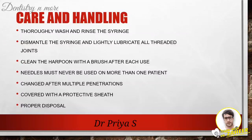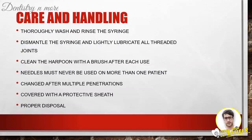To carefully handle the local anesthetic armamentarium: after each use, thoroughly wash and rinse the syringe free of local anesthetic solution, saliva, or any foreign matter. The syringe may be autoclaved like other surgical instruments; after every five autoclavings, dismantle the syringe and lightly lubricate all threaded joints, especially where the piston contacts the thumb ring. Clean the harpoon with a brush after every use. Needles must never be used on more than one patient, should be changed after three or four tissue penetrations in the same patient, kept covered when not in use, and properly disposed of after every use.